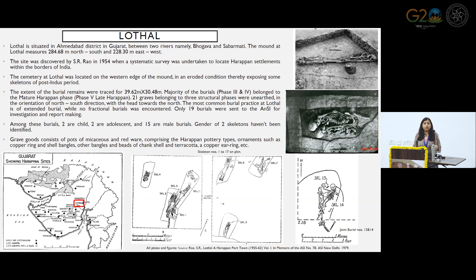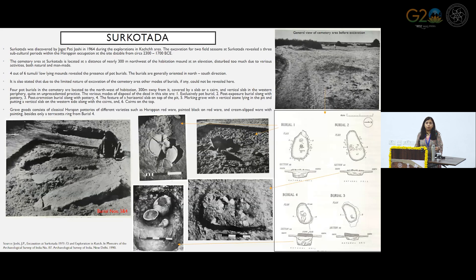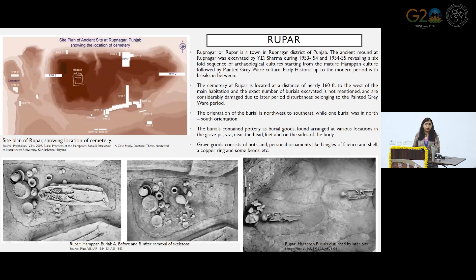Initially it was thought that only Lothal had the example of joint burial, but from recent excavations of Deccan College, one burial from Rakhigadi has been found, numbered as burial 11A and B, which is also a joint burial. From Surkotada, we have only found four pot burials, so no specific study of orientation or body alignment could be made out. In Ropar, most of the burials are very much disturbed by the PGW layer of later activities, but whatever skeletons have been excavated are mostly lying in superimposition.